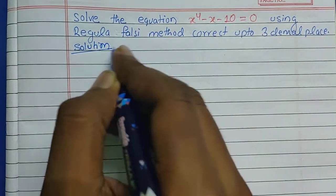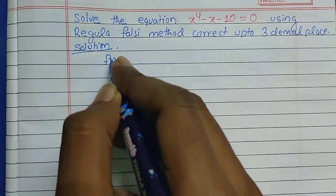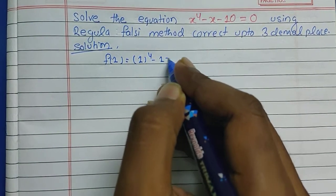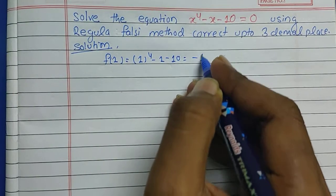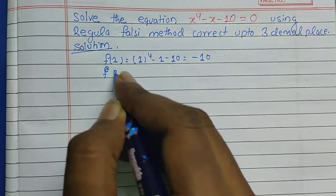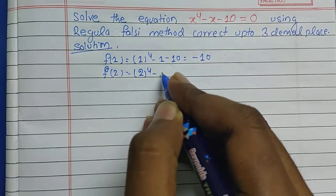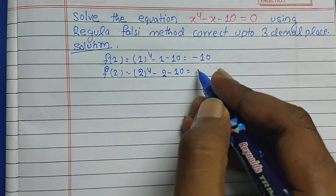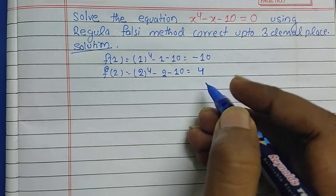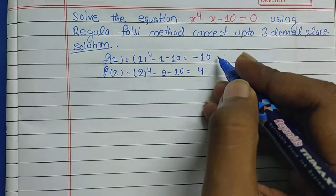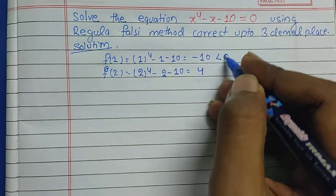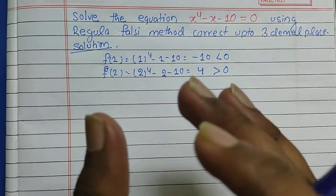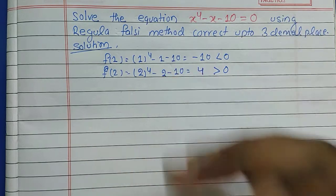For f(1): 1 to the power 4 minus 1 minus 10 gives minus 10, which is less than zero. For f(2): 2 to the power 4 minus 2 minus 10 gives 4, which is greater than zero.